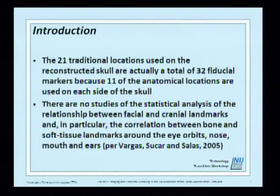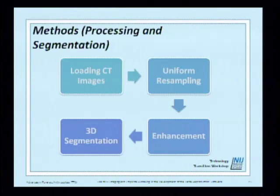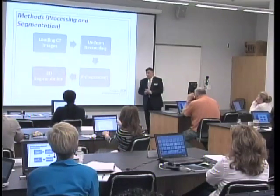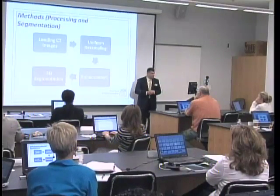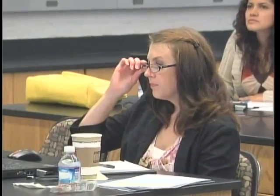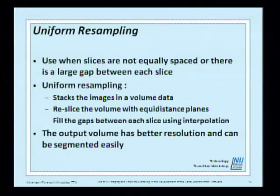Loading CT images presented problems — there were issues with non-uniform sampling. Since they scan the entire skull, sometimes using three-millimeter slices, there were some gaps that could affect bone segmentation. So we had to do enhancement and 3D segmentation. Uniform resampling is used when slices are not equally spaced or there's a large gap. It stacks the images in the volume data, reslices with equidistant planes, fills the gaps using interpolation, and the output volume has better resolution and can be segmented easily.